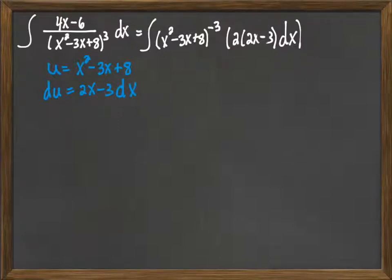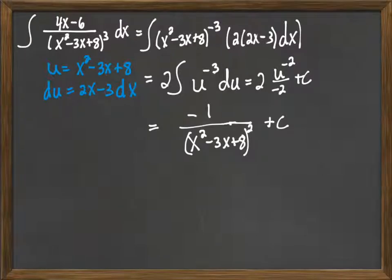So that I have the 2x minus 3 going with my dx, the 2 will factor out, the 2x minus 3 dx becomes du, and I carry the integration through. Okay, and that's the process to do integration by substitution.